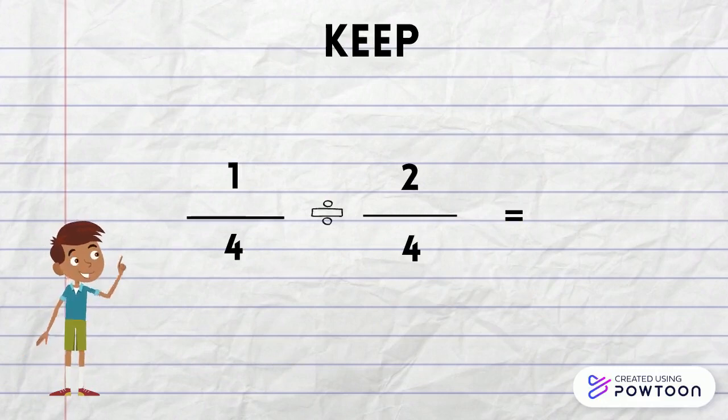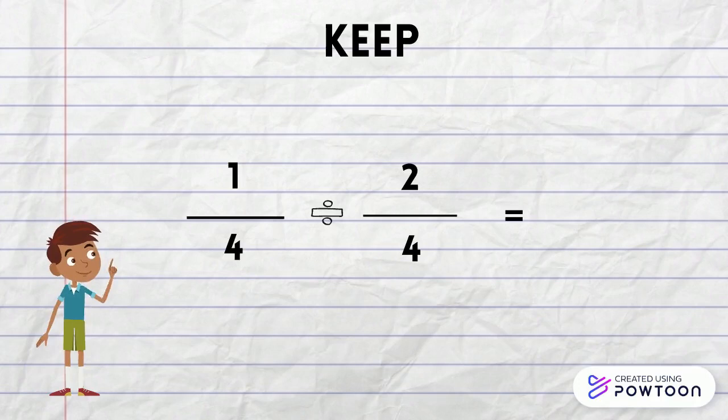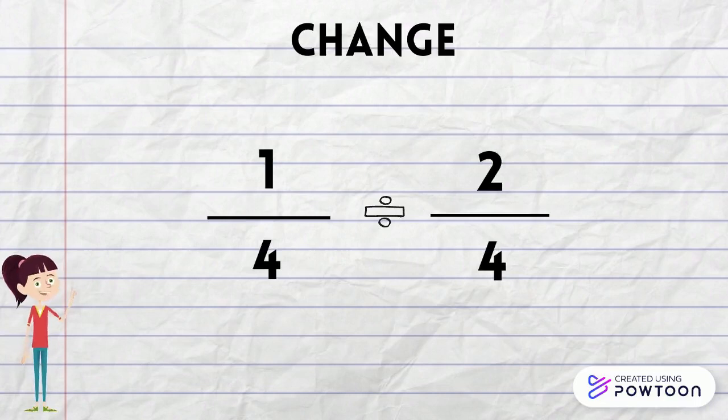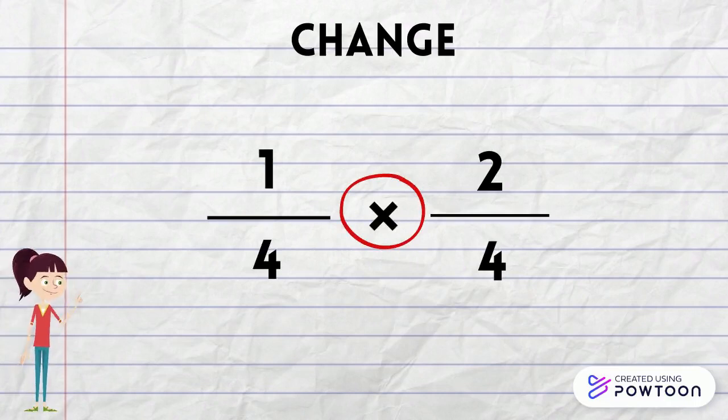The first step in dividing fractions is to keep. We keep the first fraction as is, which in this case is one quarter. The second step in dividing fractions is to change the division symbol into a multiplication symbol. So, we're basically going to be multiplying the two fractions instead of dividing.